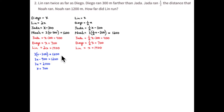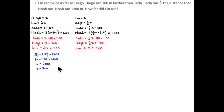So this is Noah. Three times (x minus 300) equals 1,200. Solve for x. This is using the distributive property: adding 900 to 1,200, and x equals 700. So one-third of 2,100 equals 700.